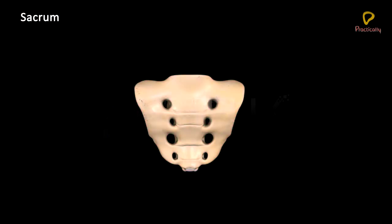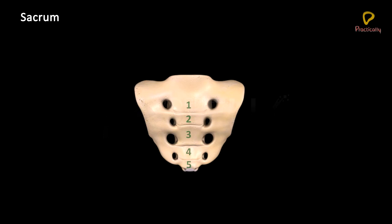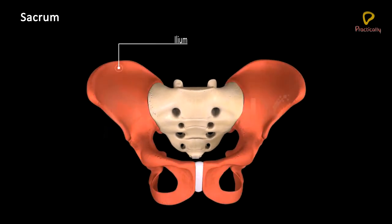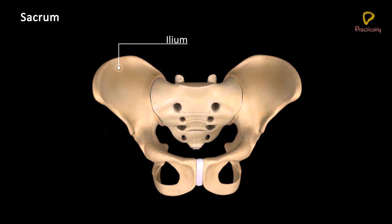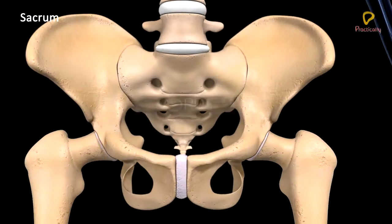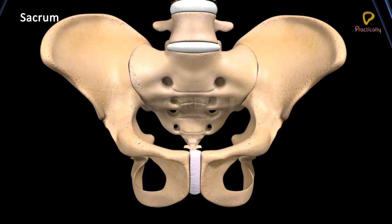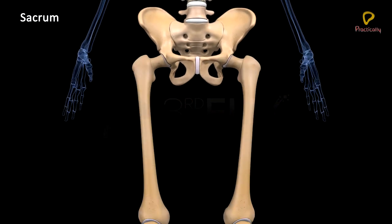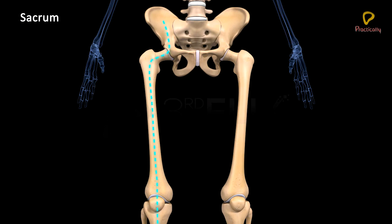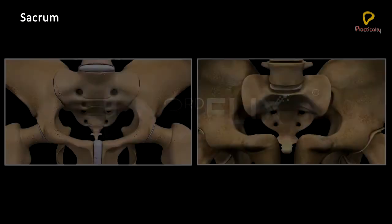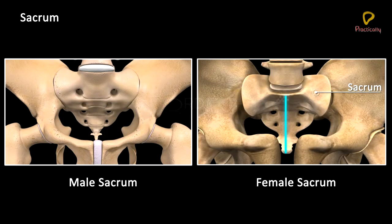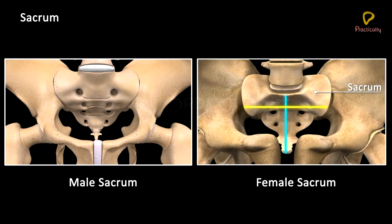Sacrum: It is a large triangular bone formed by the fusion of five sacral vertebrae. It articulates with the ilia of the pelvic girdle via the iliosacral joints. This articulation transfers the weight of the body to the legs through the pelvic girdle. The sacrum is shorter and wider in females.